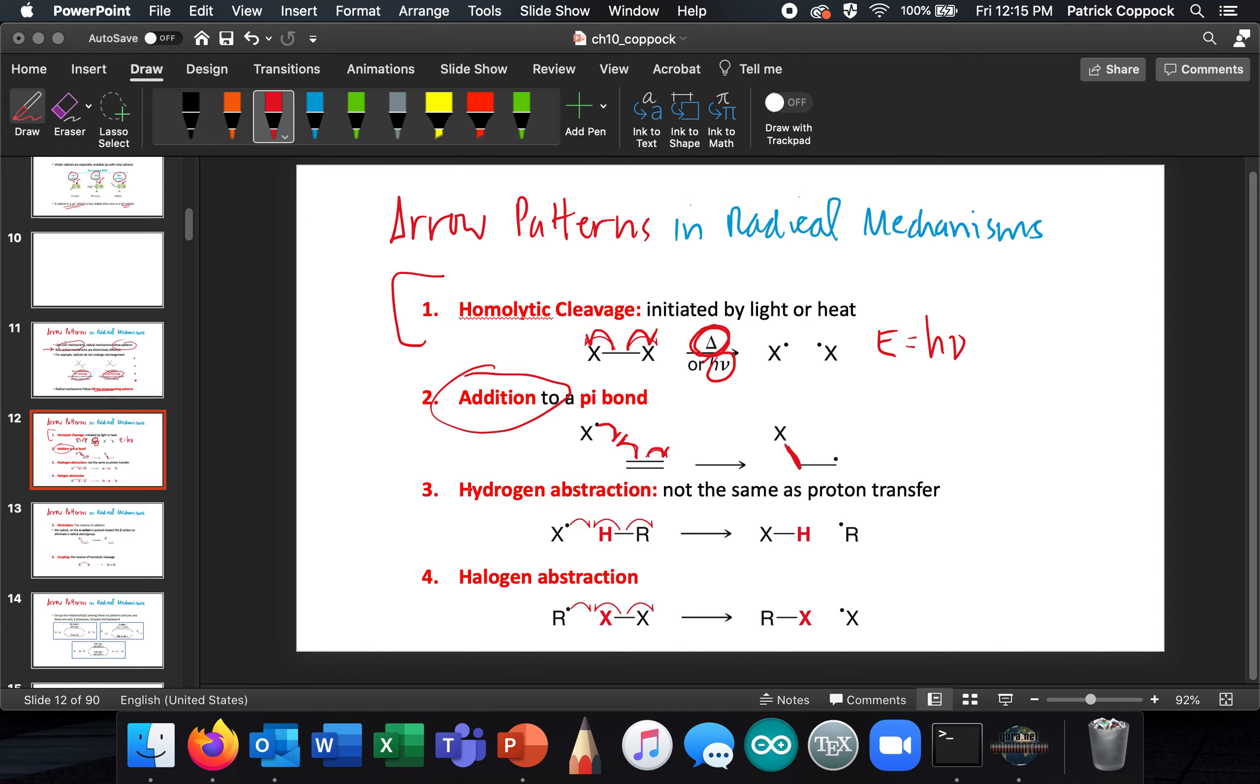You have hydrogen abstraction, which is where a radical comes along and makes a bond with a hydrogen. There's the new bond right there. And then this electron goes off with the alkyl group. So you have hydrogen abstraction, halogen abstraction.